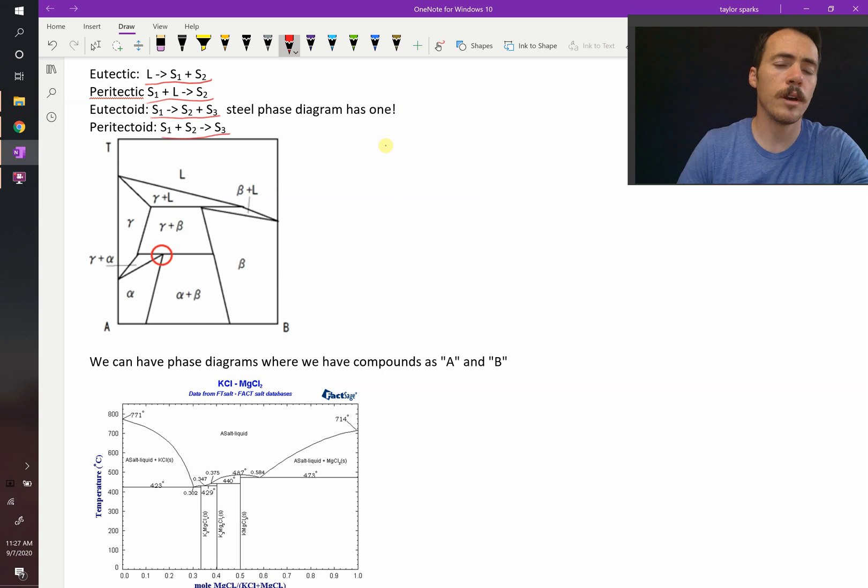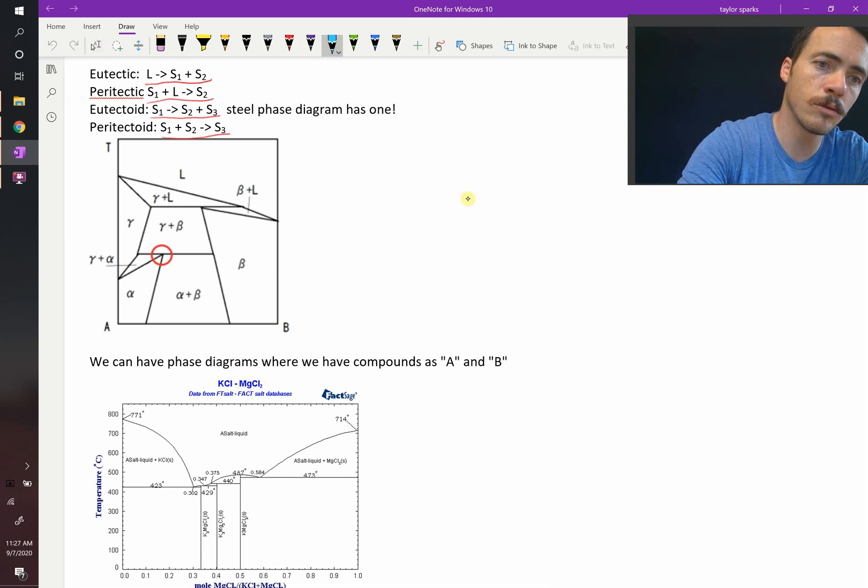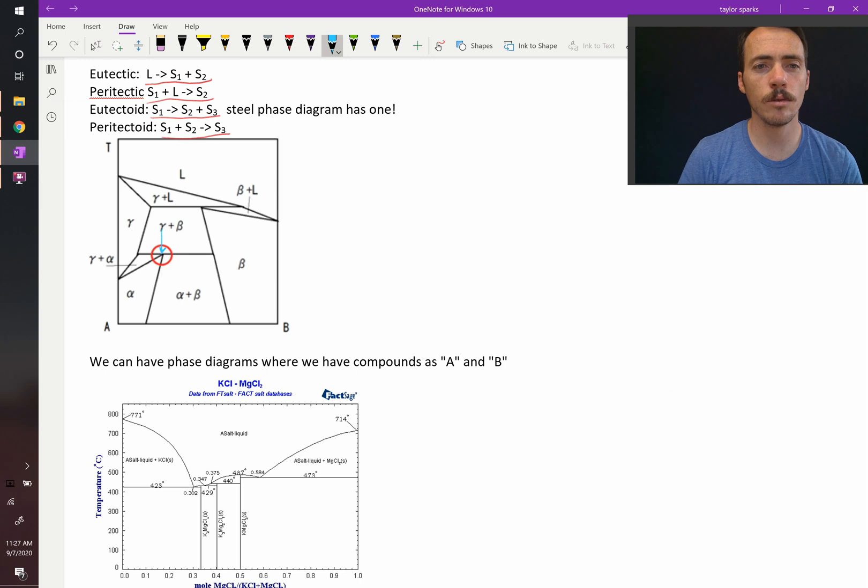So in this diagram, look at this red circle point. What would that be as you're cooling down? These are always upon cooling down, right? So as you cool through that point, at that point what do you have? Well, you've got two solid phases labeled gamma and beta turning into a third solid phase. So that would be, which one of these? That would be a paratectoid point, right?